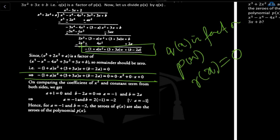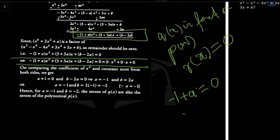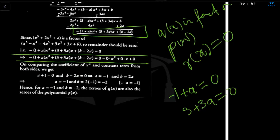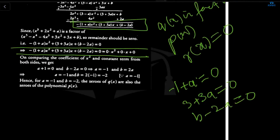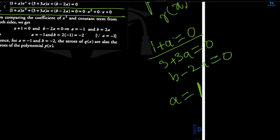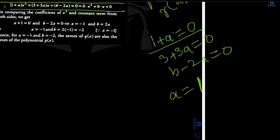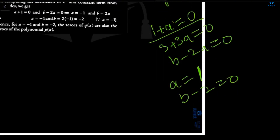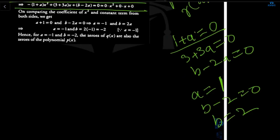Every coefficient equated to zero gives: from the first equation, A = 1; but correcting the sign, it is -1 + A = 0 meaning A = 1, however re-checking shows it is actually 1 + A = 0, so A = -1. Putting A = -1 in B - 2A = 0: B - 2(-1) = 0, so B + 2 = 0, giving B = -2. Therefore the value of A is -1 and the value of B is -2.